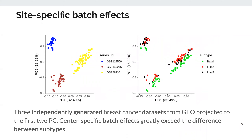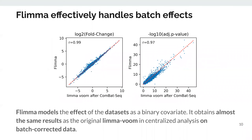To demonstrate that FLIMA can effectively handle batch effects, we applied it to three independently generated breast cancer datasets from GEO. Here we can see that center-specific differences are much stronger than the effects of subtypes, and we again compared luminal subtype versus basal. FLIMA models the effect of the cohort as a binary covariate, and despite such a strong batch effect in the data, FLIMA managed to return nearly the same fold changes and p-values as LIMA-VOOM run on the same data centrally after batch effect correction by ComBat-seq.